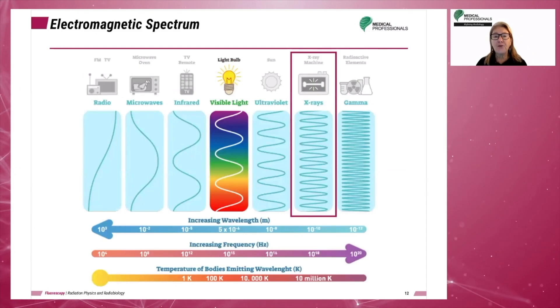X-rays are found along an electromagnetic spectrum along with other forms of radiation. Everything from radio waves to gamma rays are found on the electromagnetic spectrum or EMS.